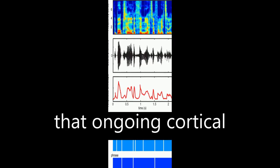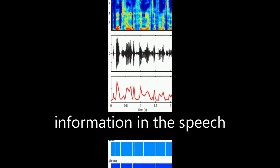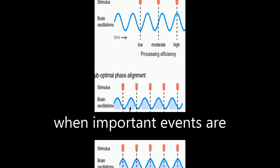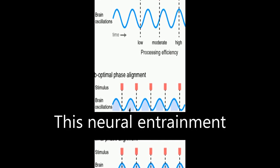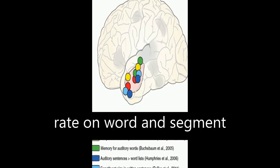Neuroimaging data shows that ongoing cortical oscillations phase lock to low-frequency information in the speech envelope, effectively encoding a prediction of when important events are likely to occur. This neural entrainment to speech rhythm can explain effects of speech rate on word and segment perception.